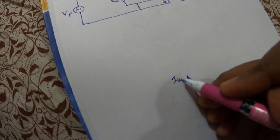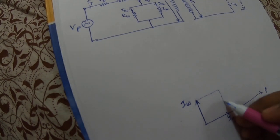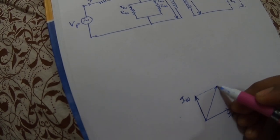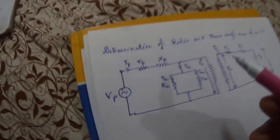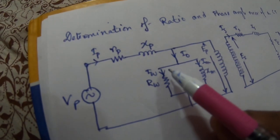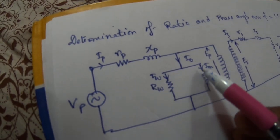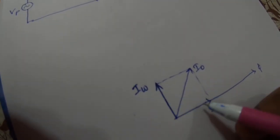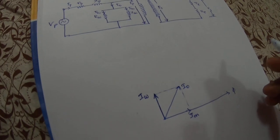Iw is the working component. The resulting quantity we get is the no-load component I0. I0 is the phasor sum of Iw and Im, so I0 equals the phasor sum of Iw and Im.